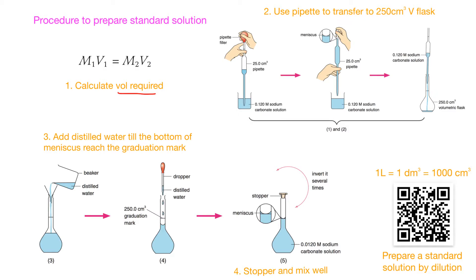We use the word 'transfer' here. Remember you have to tell them the volume of the volumetric flask you use. When you write the essay, you have to write the full name 'volumetric flask.' So we transfer it to the 250 cm³ volumetric flask.